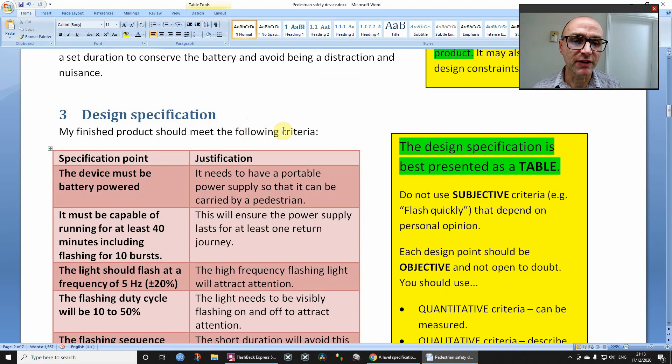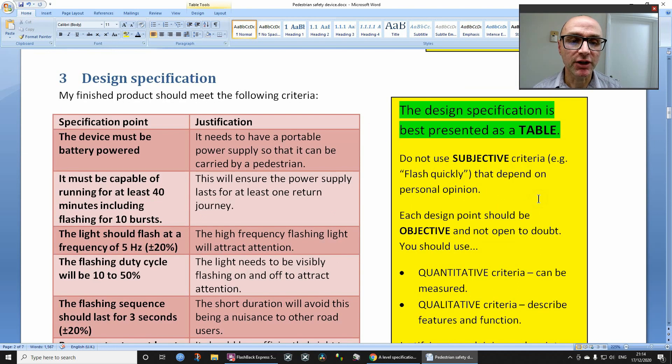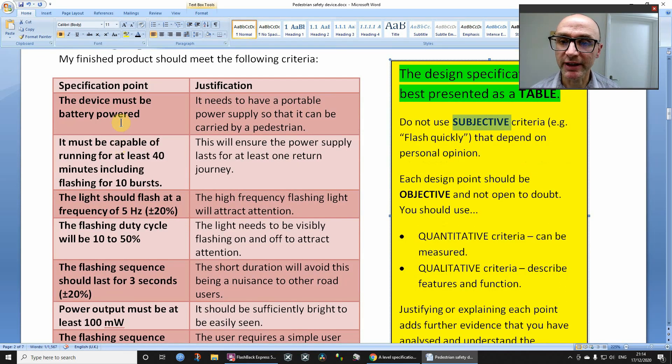The design specification is supposed to say what the successful product will actually do, or how it will function, or whatever it happens to be. Now you have to use objective criteria and not these things called subjective criteria. So subjective would be something like flash quickly, or look good, or run fast, or operate for a long time. Those are all subjective because one person's idea of being fast, or work well, or something like that, is down to personal opinion. You don't want any personal opinion points because they're much more difficult to test. You want objective points, you know, something like it must be battery powered, because it's either battery powered or not.